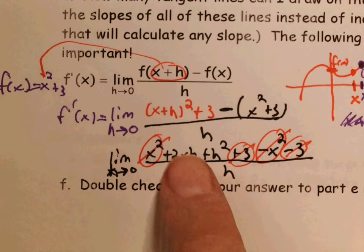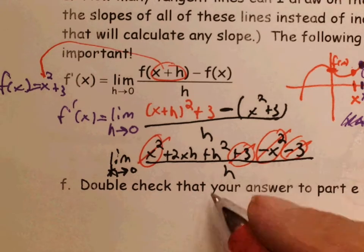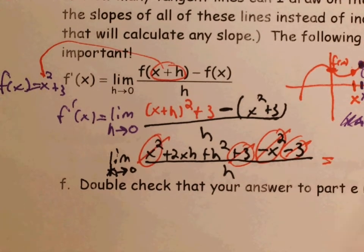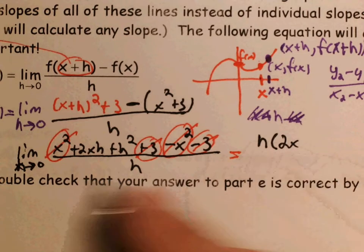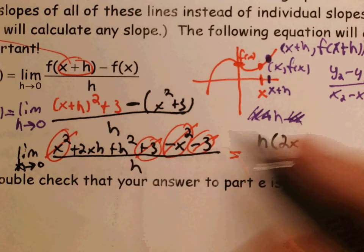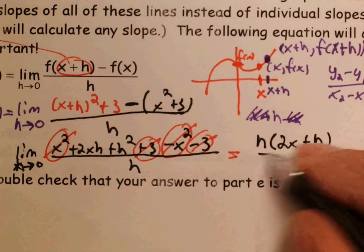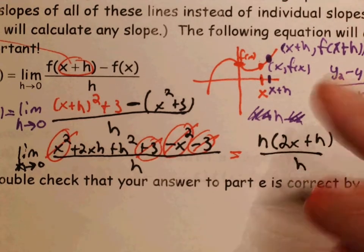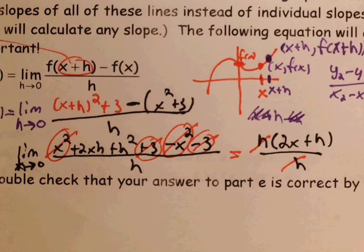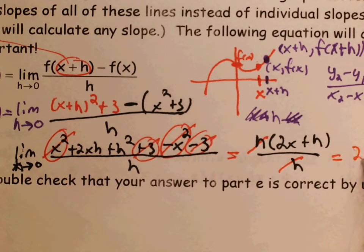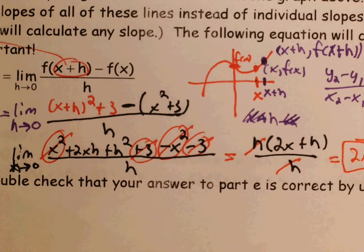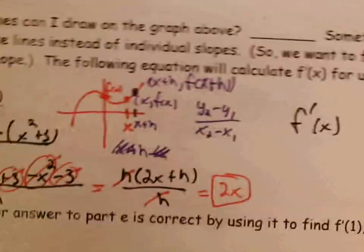Still, if we plug in 0 for h, we'll get 0 over 0. So we're going to use our factor and cancel trick here, and we're going to factor out an h from the top. So h times 2x gives us 2xh, plus h, h times h gives us the h squared, all over h. And now multiplying by h and dividing by h cancels out. And we can do direct substitution. h goes to 0, so 2x plus 0 is just 2x. The answer is that the derivative function, f prime of x, is 2x.